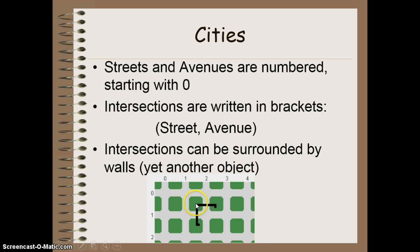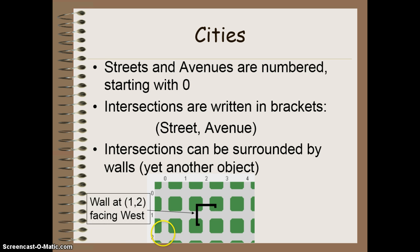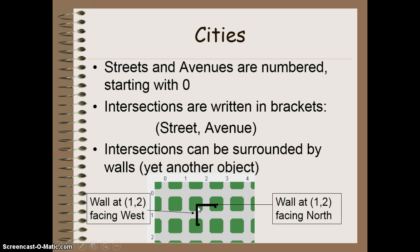In this example, I have a particular intersection that is surrounded by two walls — one on the left-hand side and one on the top. The intersection address for this one is street 1, avenue 2, so intersection 1, 2. This particular wall is facing west, and then we have the second wall at the same intersection, but this time it is facing north.